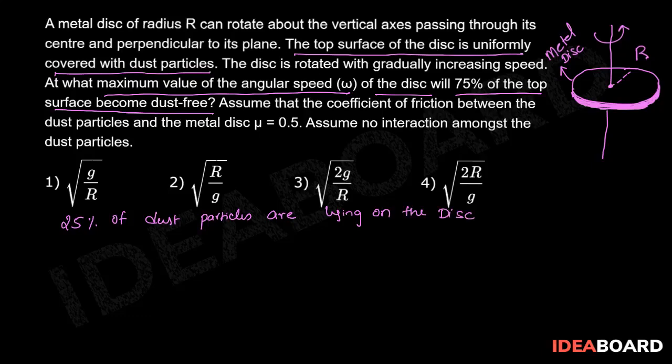So let us find out the radius up to where these 75% of dust particles are spread. Since the dust particles are uniformly distributed, the surface density of dust particles is given by sigma equals to the total mass of dust particles capital M upon the area pi R square.